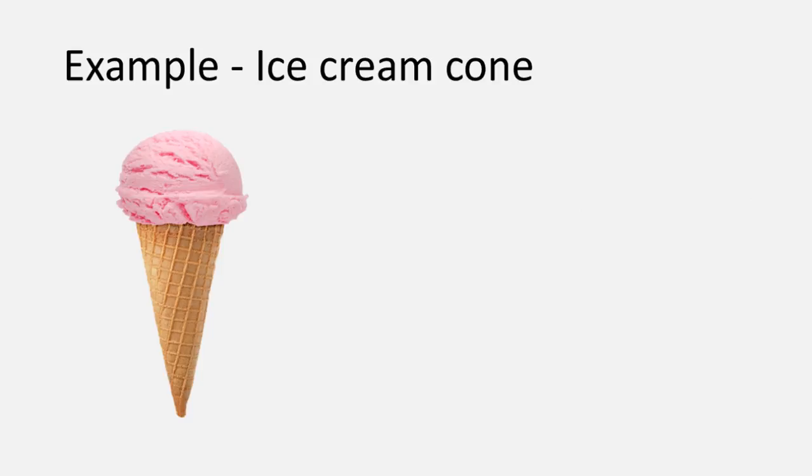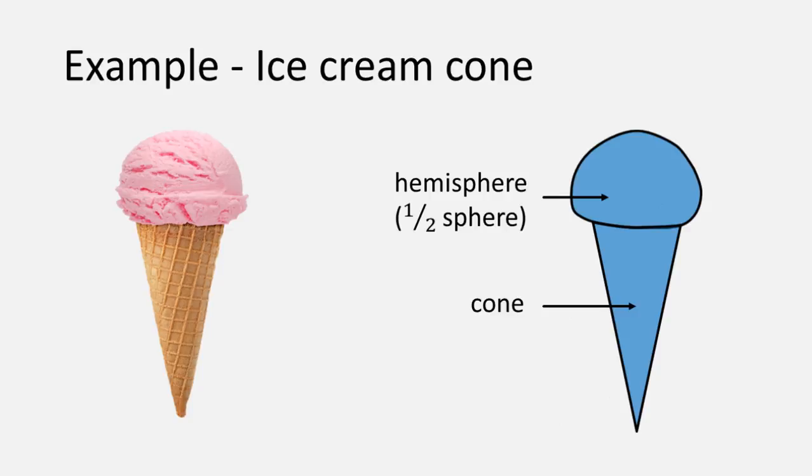Our first example is an ice cream cone. If we split this into two pieces, we see that there is a hemisphere, or half a sphere, sitting on top of a cone.